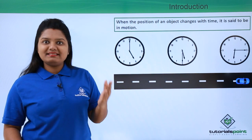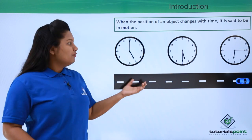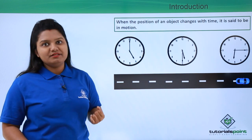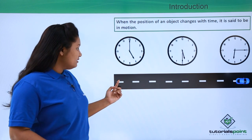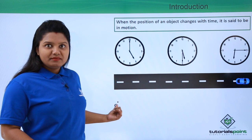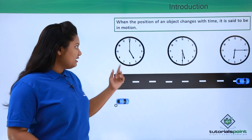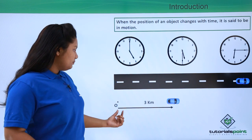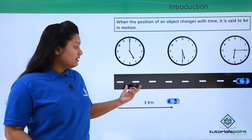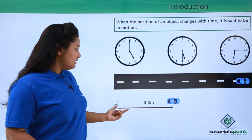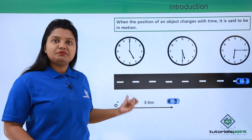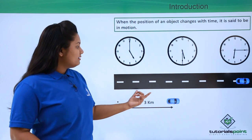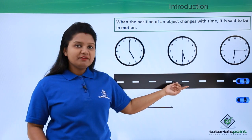But how can we precisely say that this car was moving? We cannot say it precisely without one more thing, which we will learn here. Let us consider the starting point of the car to be point O. From here the car starts, and by 5:30 it has reached a certain point. Let the distance between point O and this point be three kilometers. We can say the car has moved since its current position is three kilometers away from point O.